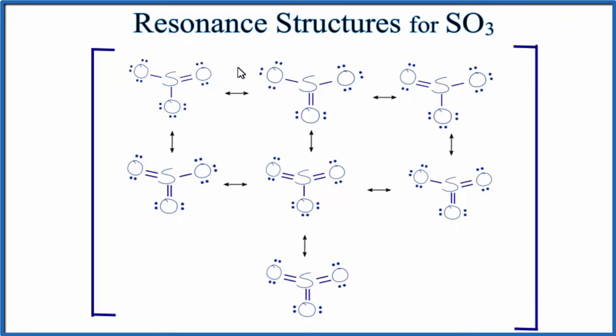These are the seven resonance structures for SO3, sulfur trioxide. This is Dr. B, and thanks for watching.